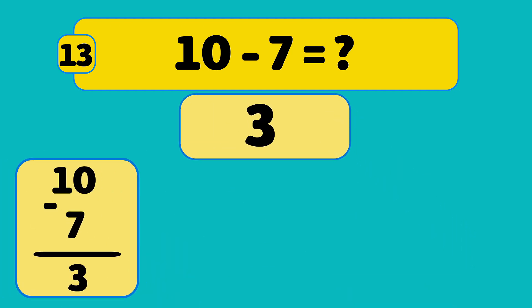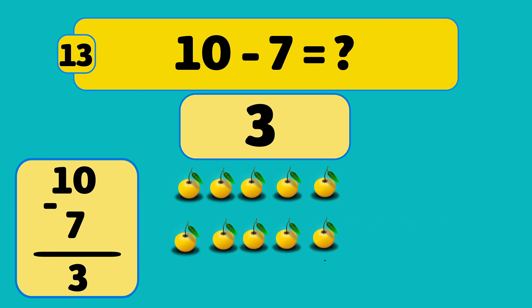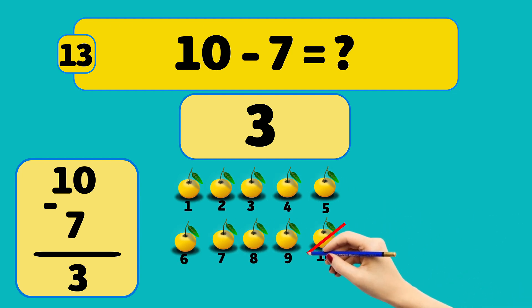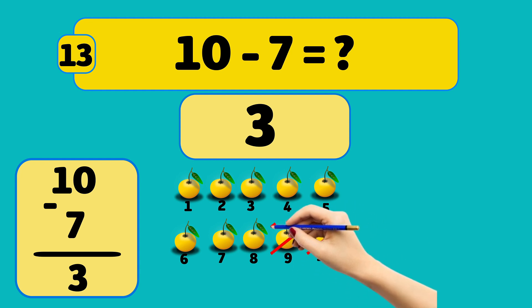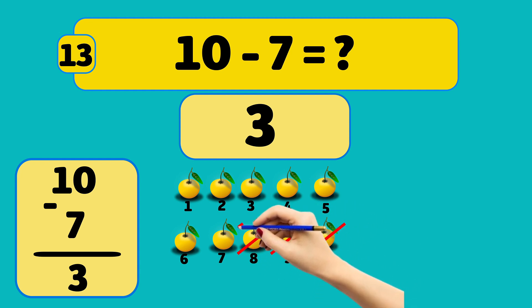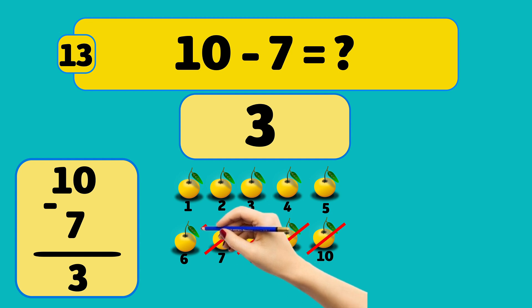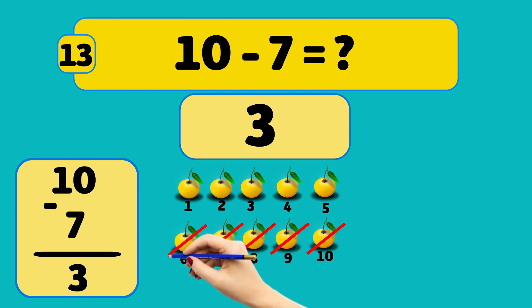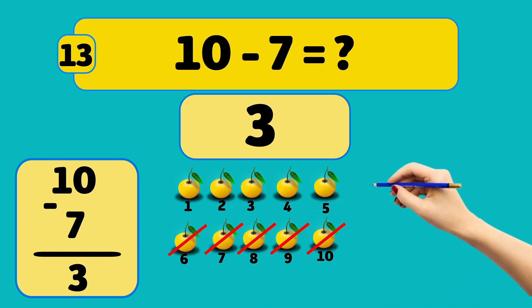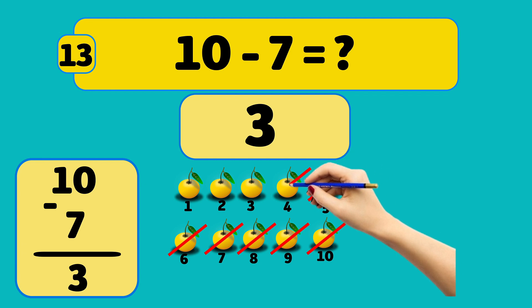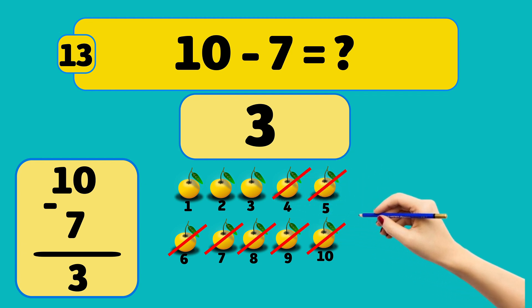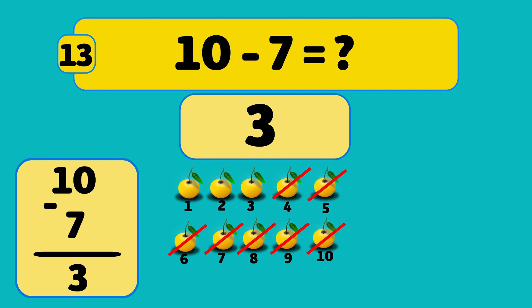Starting with 10 oranges and removing them one by one: 10, 9, 8, 7, 6, 5, 4. Now we have three oranges left.